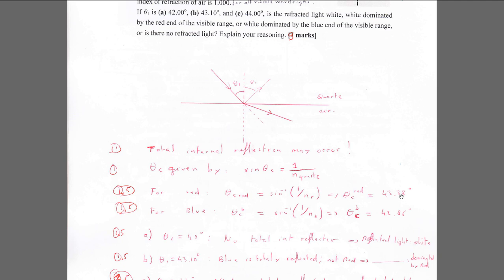For case B, theta equals 43.1 degrees. This is in between the two critical angles — lower than the critical angle for red, so red will still be transmitted, but higher than the critical angle for blue, so blue will be totally internally reflected. Therefore the transmitted light will have some red but no blue, so it will be mostly red.